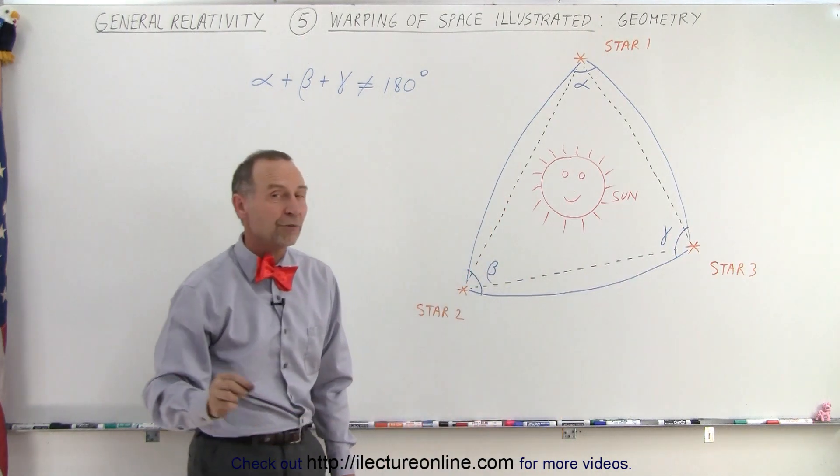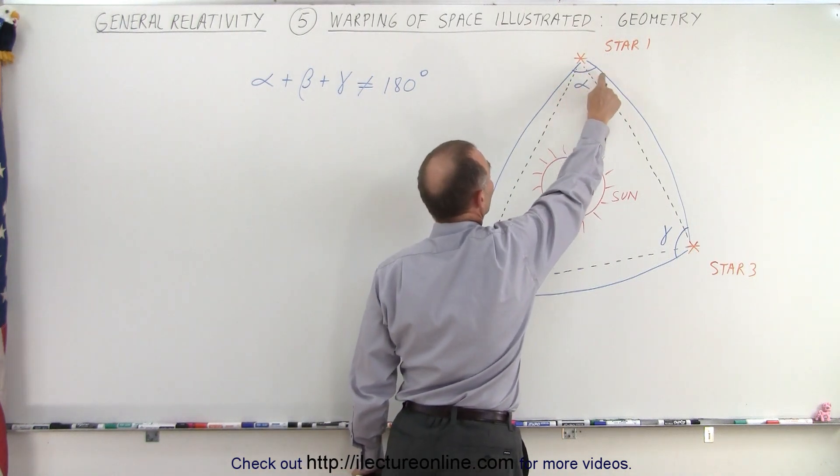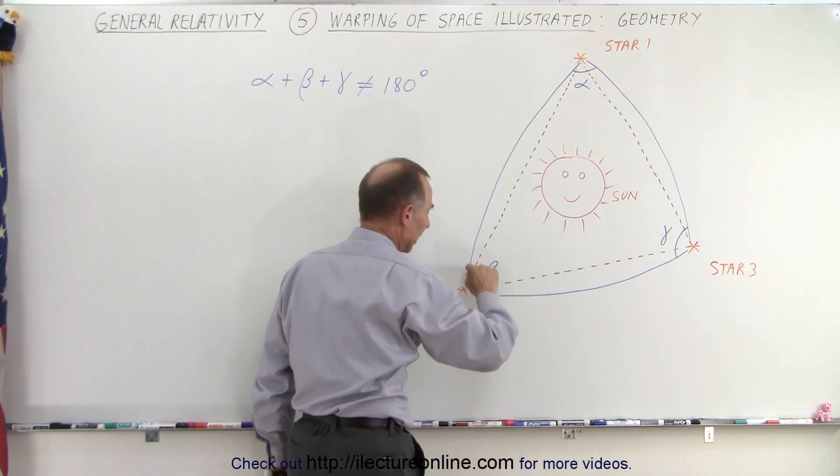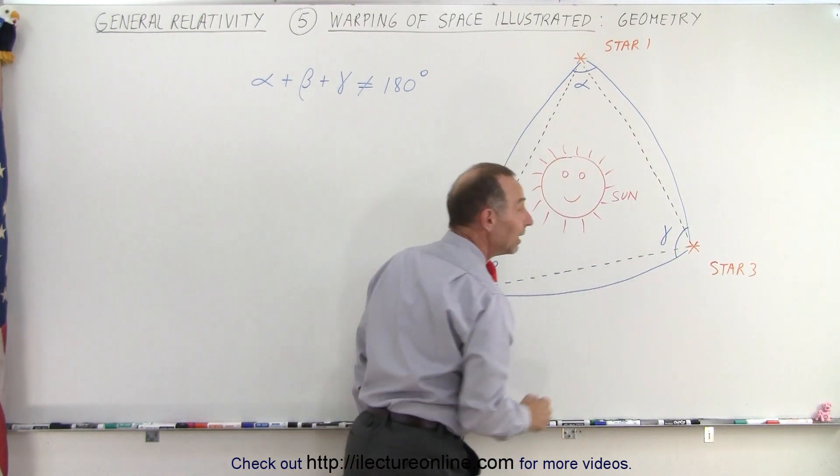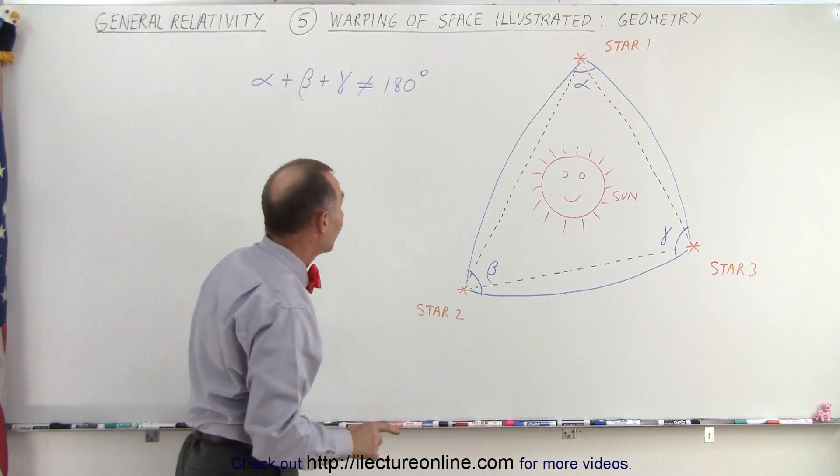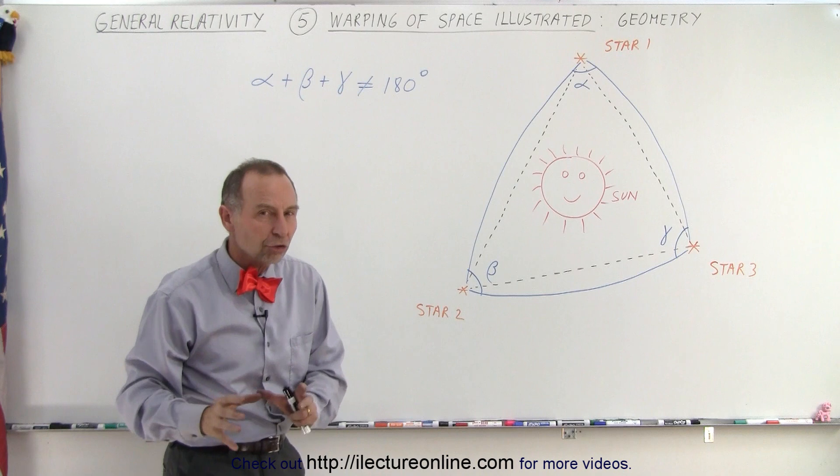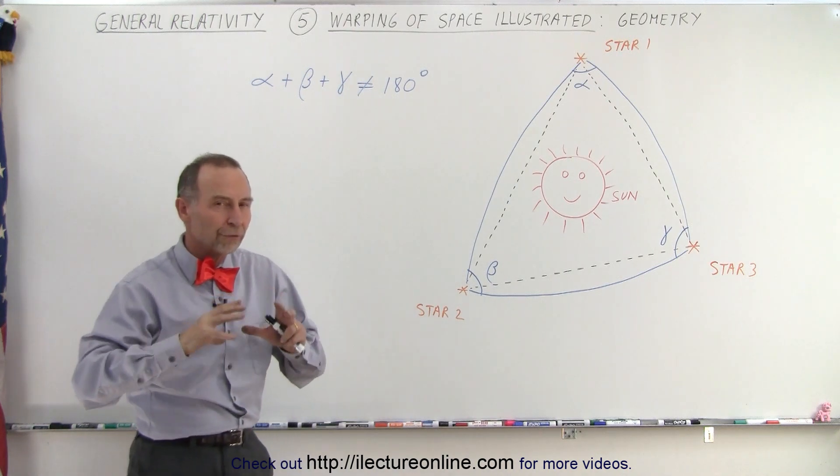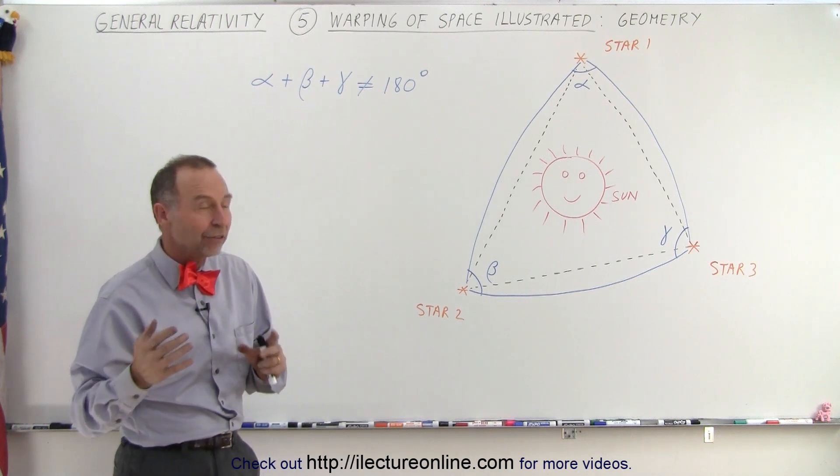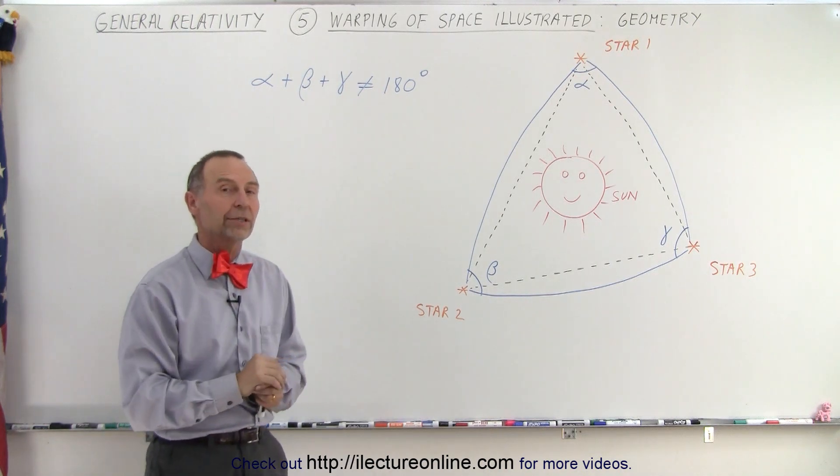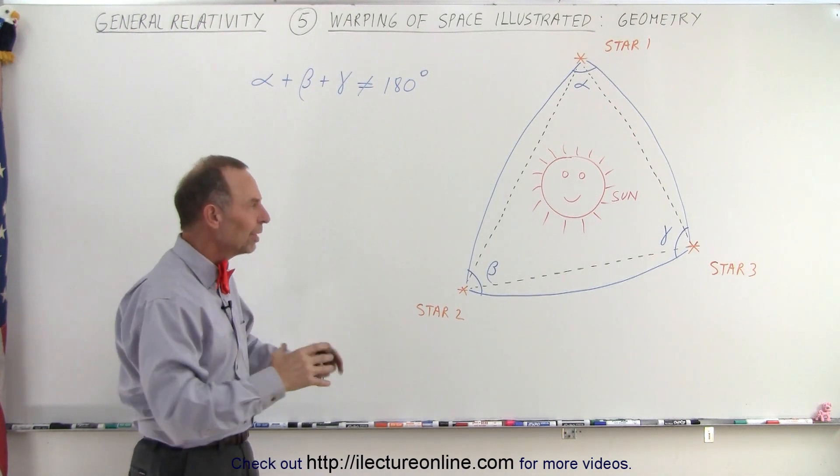Now, if we find the angles between those two departure points and arrival points of the light, and again over here and again over there, and we call them alpha, beta and gamma, if we add those three angles together, guess what? They do not add up to 180 degrees. They're actually larger than 180 degrees. So the curvature of space is such that you form a triangle, but the angles of that triangle will not add up to 180 degrees. Space is curved because of the presence of mass within space.